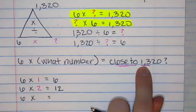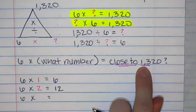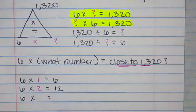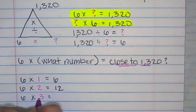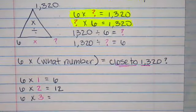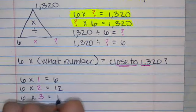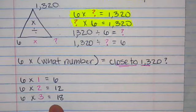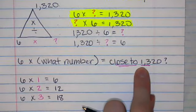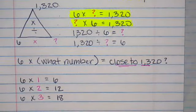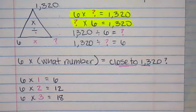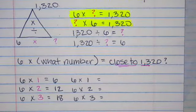Well, 12 is getting kind of close to these first two numbers. So that's a possibility. I could also try six times three. And six times three is 18 using my basic math facts. And 18 is a bit larger than these two. So I'm going to try to build on again. And I'm going to add a zero to each one of these numbers.